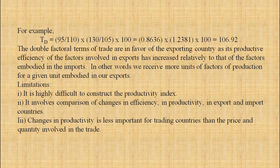For example: TD = (95/110) × (130/105) × 100 = 0.8636 × 1.2381 × 100 = 106.92. The double factorial terms of trade are in favor of the exporting country, as its productive efficiency of the factors involved in exports has increased relatively to that of the factors embodied in the imports.